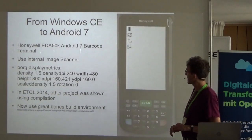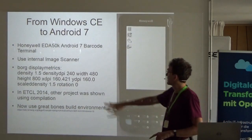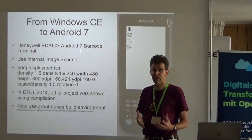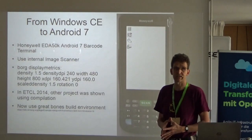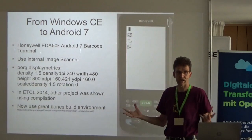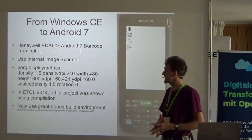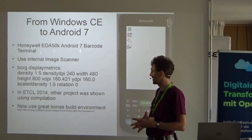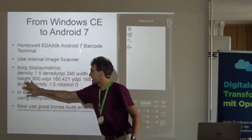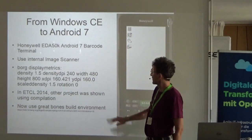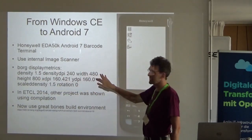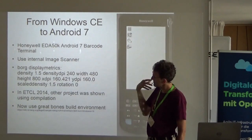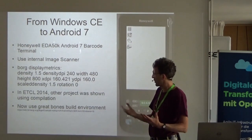That's the device — there's a photo. It has an internal image scanner and also a camera. We could do the same thing with zBar or other barcode widgets to decode, but the internal barcode scanner has much more performance. The display matrix is 800×480 which is, for Android, very low — but for this device it's a medium one. In my 2014 talk I especially spoke about how to compile Android and strip it down.